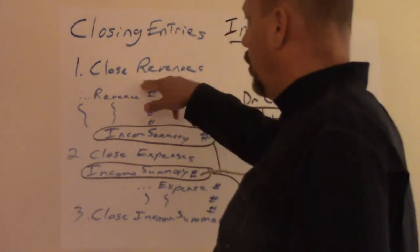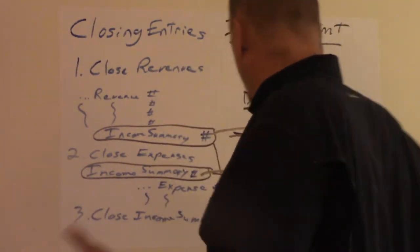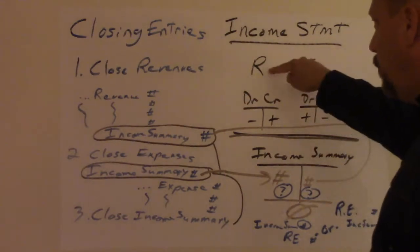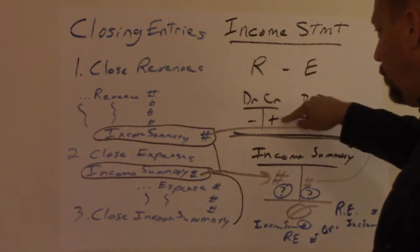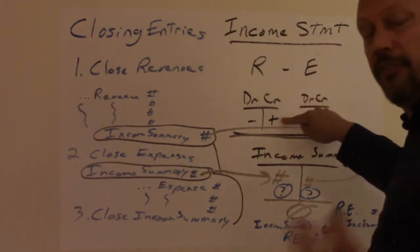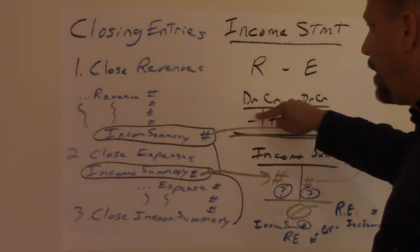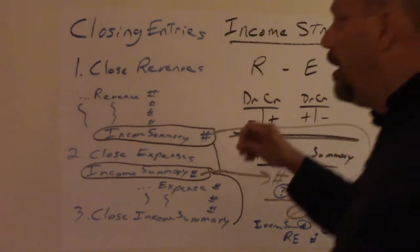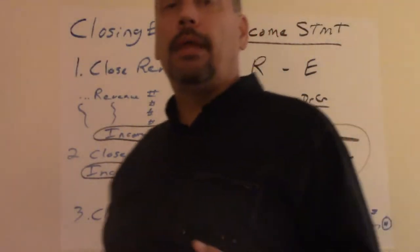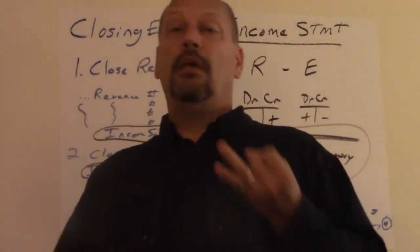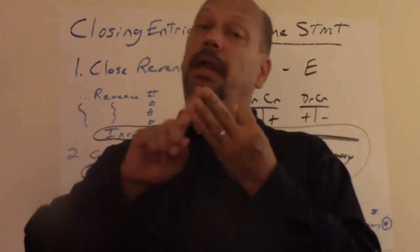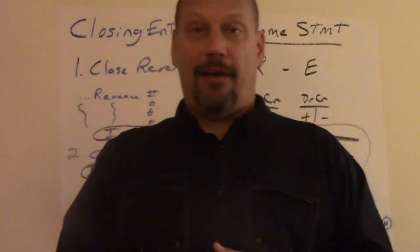So the first thing you do is close revenue. Remember we already said to increase a revenue account on the income statement you credit it. So that's your normal balance is what it takes to increase. So that means we need to debit all the revenue accounts for whatever the totals are. Sales revenue, service revenue, and interest revenue.